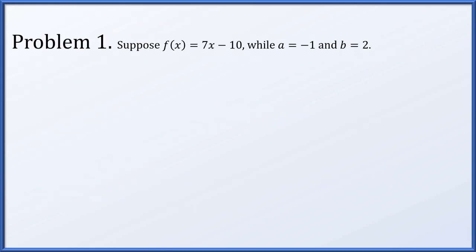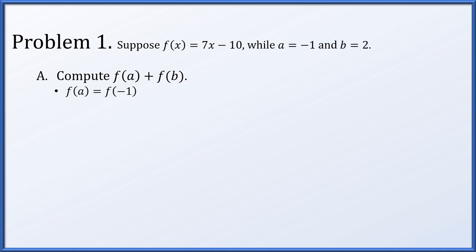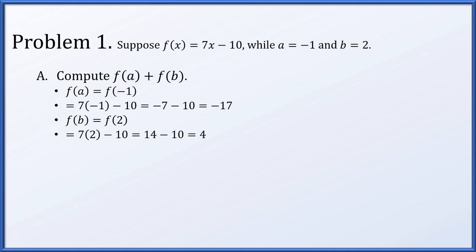For problem one, let's suppose f of x equals 7x minus 10, a is equal to negative 1 and b is equal to 2. First, we're asked to compute f of a plus f of b. f of a is equal to f of negative 1, since a equals negative 1. We compute f of x equals 7x minus 10, so f of negative 1 is 7 times negative 1 minus 10, which resolves to negative 17. Similarly, since b is equal to 2, f of b is equal to f of 2, which is 7 times 2 minus 10, which computes down to 4.